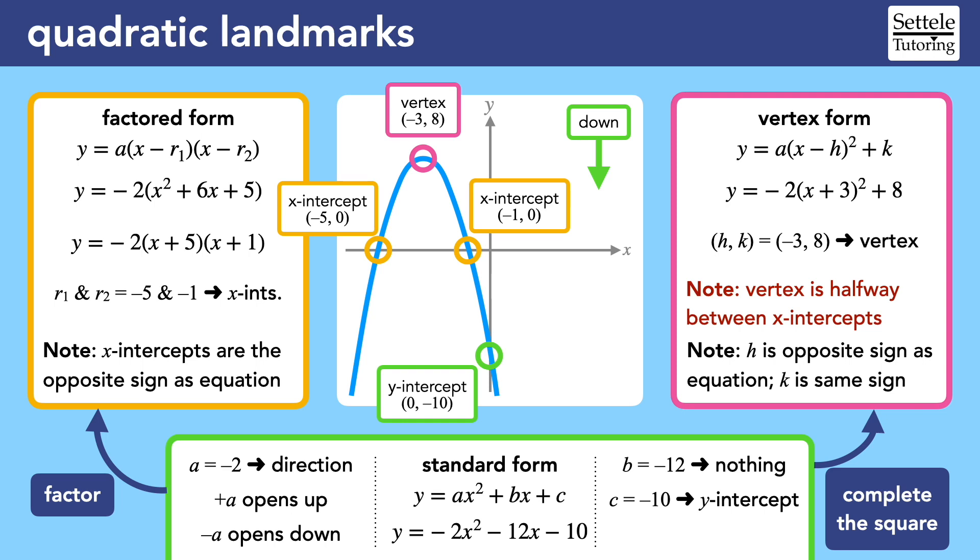As you can see, the x-coordinate of negative 3 is halfway between negative 5 and negative 1. From there, you could plug the x into the standard form to find that the y-value is 8. It is probably easier to find the vertex points first, and then use those values for h and k to build the vertex equation.